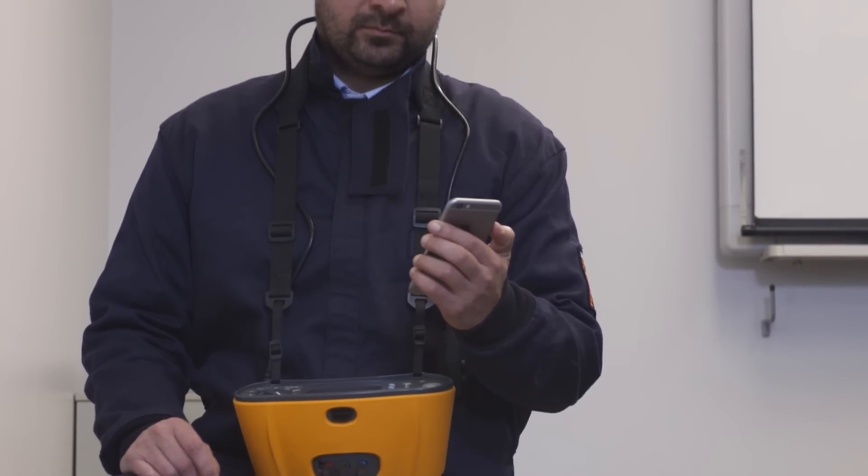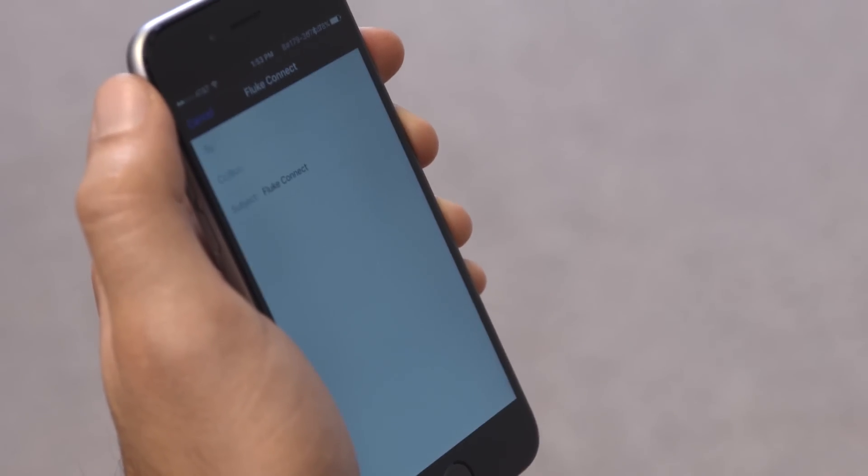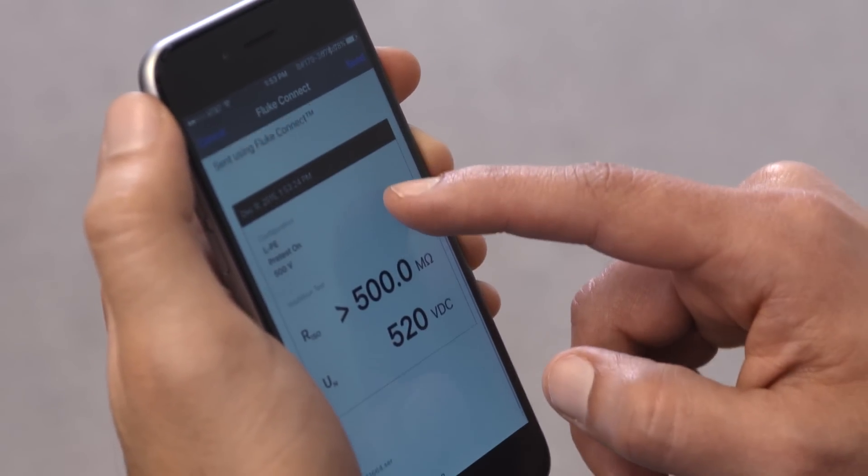The Fluke 1664 FC also includes built-in Fluke Connect wireless connectivity so you can record test results onto a smartphone app and save data to the cloud. Fluke Connect also gives you share live video call so you can show the data and the equipment in real time.